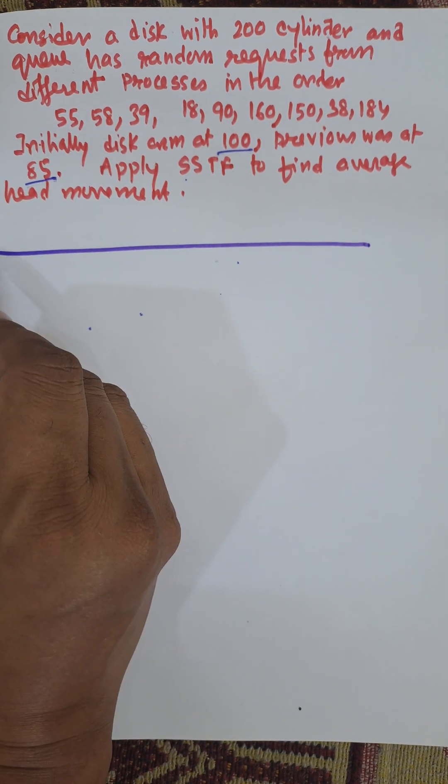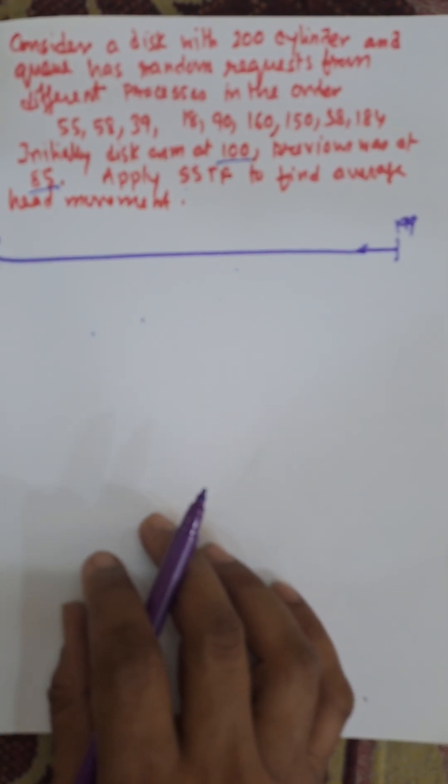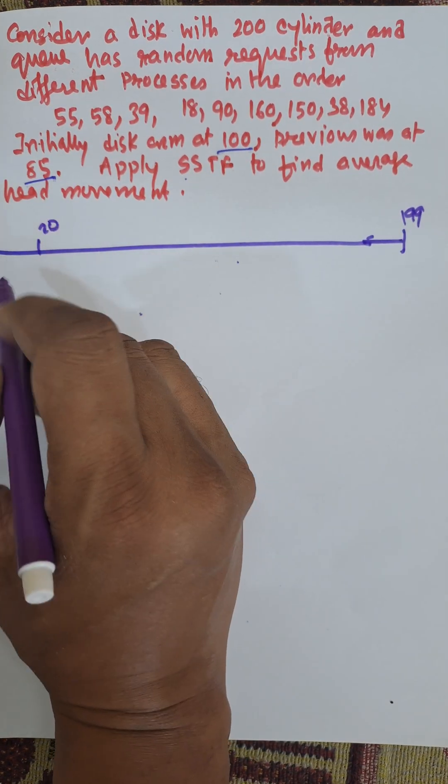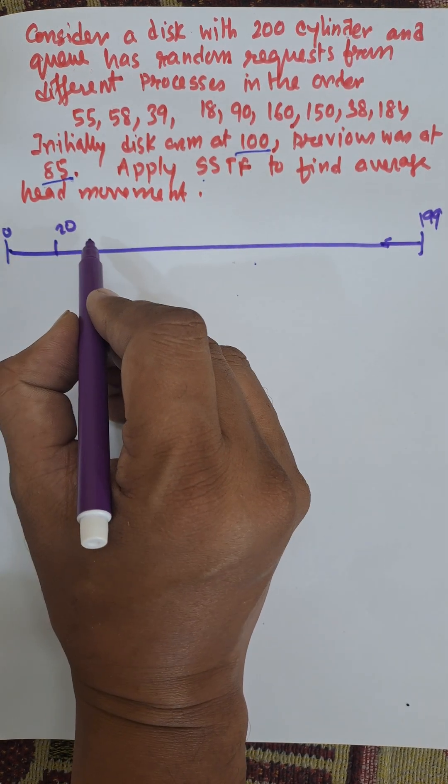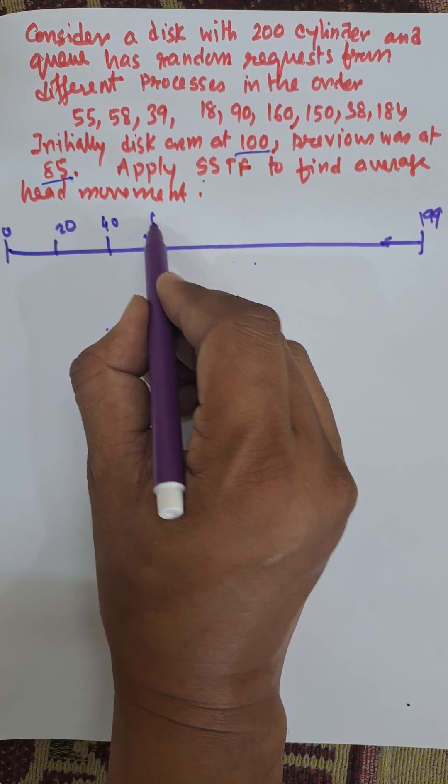Total cylinders from 0 to 200, the last one is 199. Now we need to mark the cylinders. I am marking here with 20 gap: 20, 40, 60.